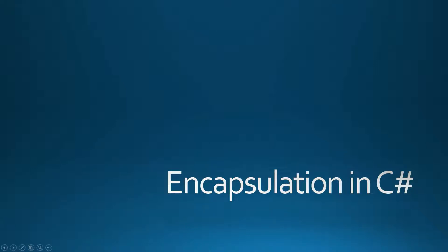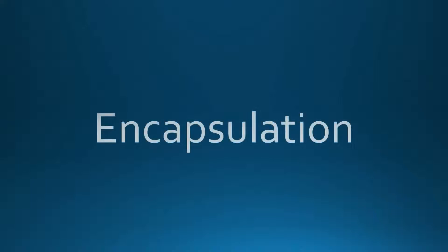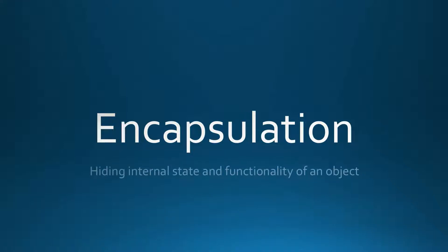Hello guys, let's talk about encapsulation in C-Sharp. Encapsulation is one of the main principles of object-oriented programming. Encapsulation means hiding internal state and functionality of an object, and only allowing access through a public set of functions.